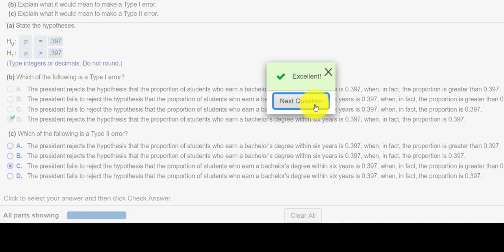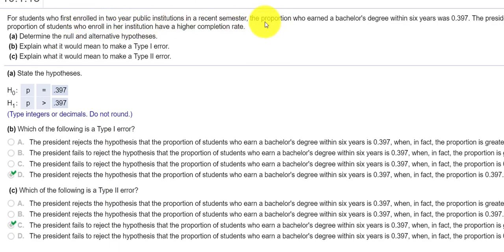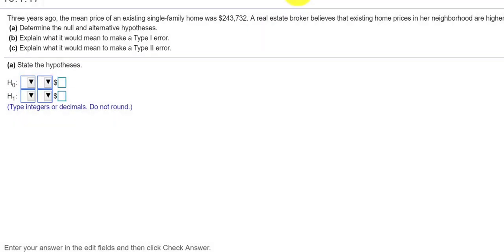Next question. Okay, number three. It looks like it's similar to number two, except notice the change here. Instead of a proportion, now it says mean. The previous question looked like we tested a proportion, so we use the P. Now for question number three, it looks like we're testing a mean, so we're going to use the mu symbol. It looks like a U.